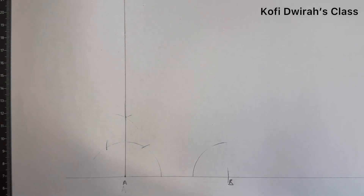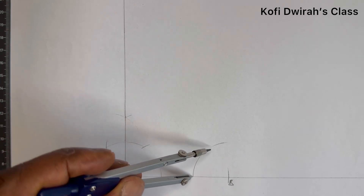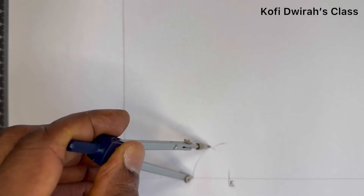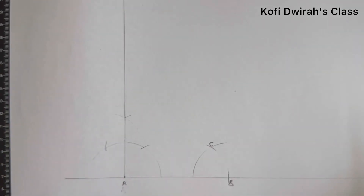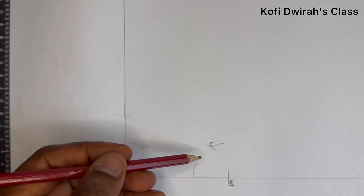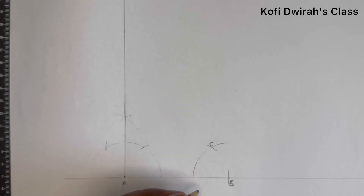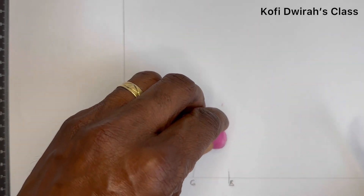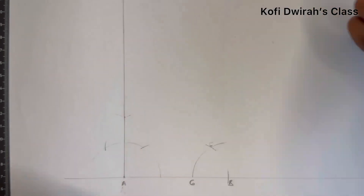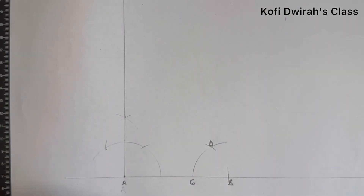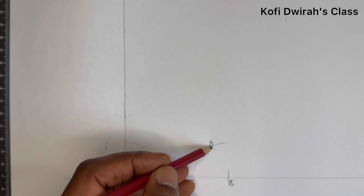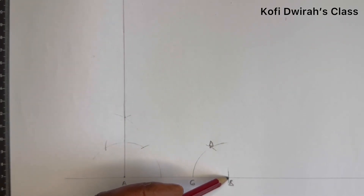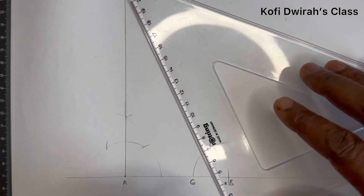If you know how to construct a 60 degree or 30 degree angle, check on my channel. With the same radius, at this point draw another arc to get a point — call it point C. The distance from point C to this side, consider this point here to be point D. When you draw a line from B through D, the angle will be 60 degrees. We are going to bisect this to get the 30 degree angle.